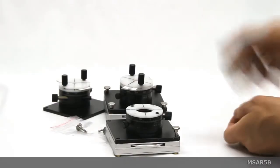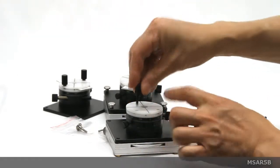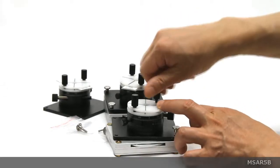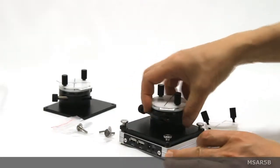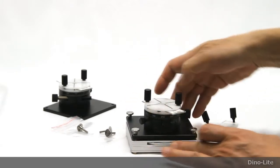Use the two included black thumb screws to connect the top disc to the MS-AR5B stage. You can place a slide for viewing beneath the top disc and tighten the thumb screws to secure.